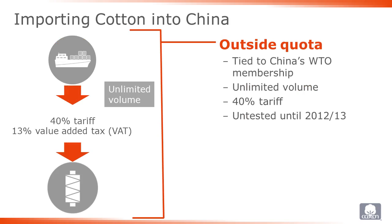The final way that cotton can be brought into China is outside of the quota system. When China joined the WTO, they were required to create an option in which imports could be brought into the country without government-imposed limits or quotas. However, if a mill wants to import cotton outside of the quota system, they must pay a 40% duty rate. Given the high tariff, this possibility was not pursued in the past. Nonetheless, in recent crop years, with the record separation between Chinese and world prices, it has been a viable option at certain times.